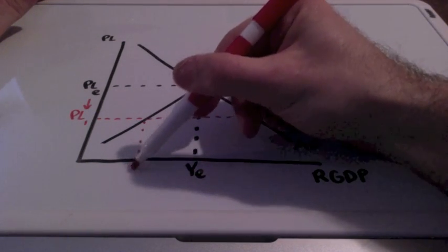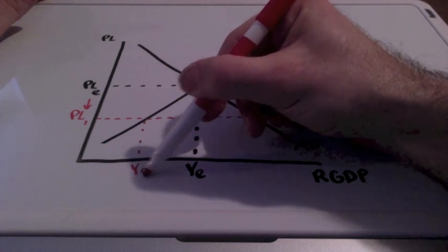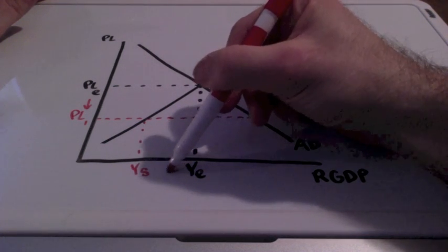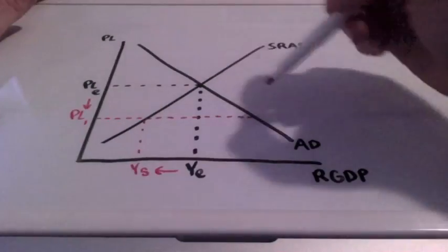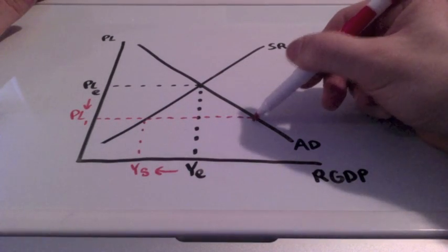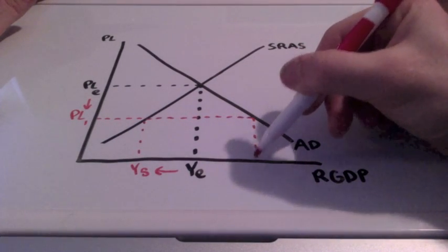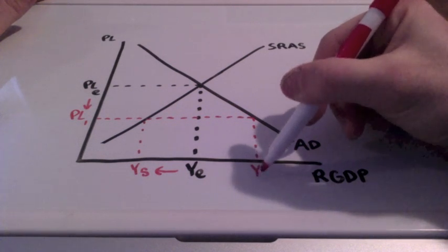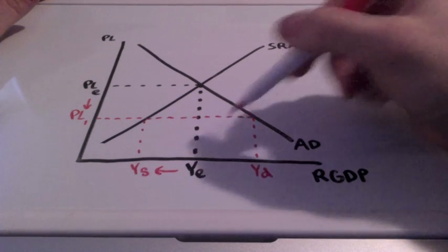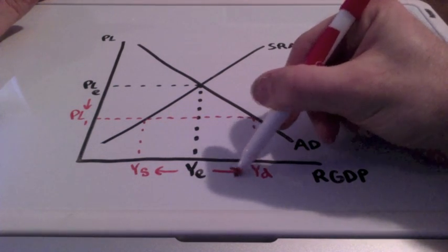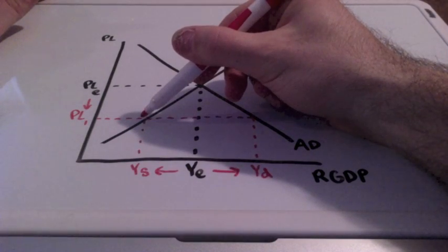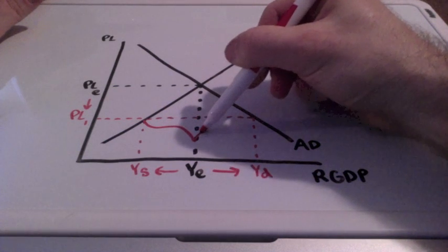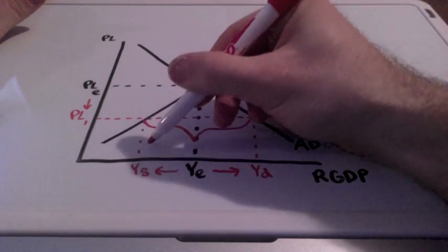Our GDP for quantity supplied is going to go down. As it intersects with our aggregate demand curve, our GDP for demand is going to increase, resulting in a shortage.